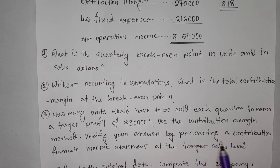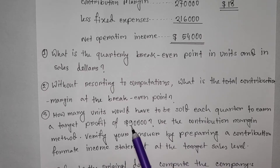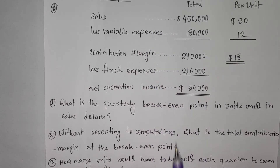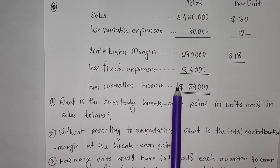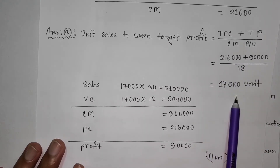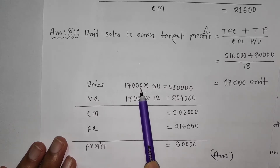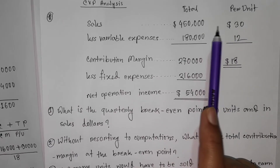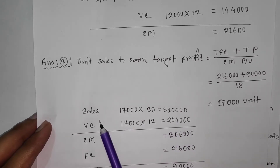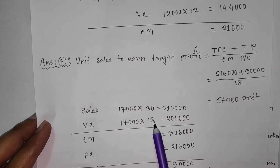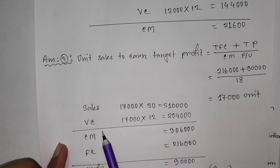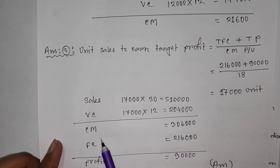Use the contribution margin method. Verify your answer by preparing a contribution format income statement at the target sales level. We say the price gives 9,000 units so that we can earn the target profit. At 7,000 units, variable cost is added, and the fixed cost is included to arrive at net operating income.